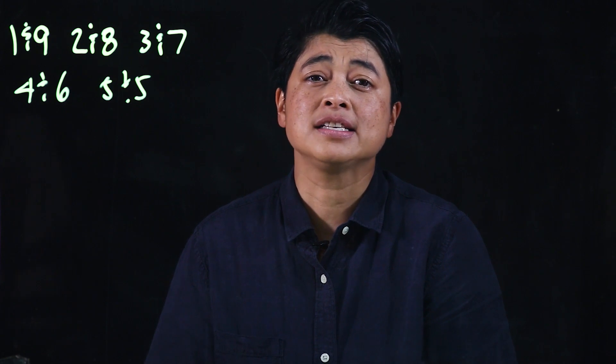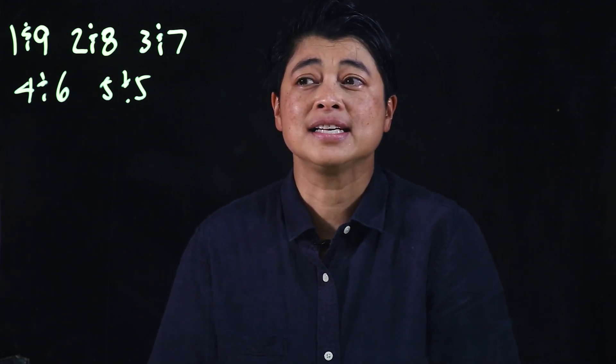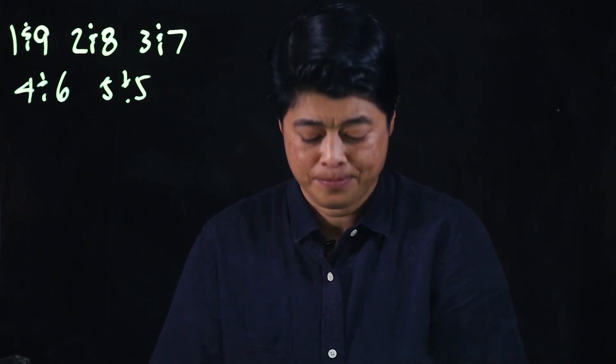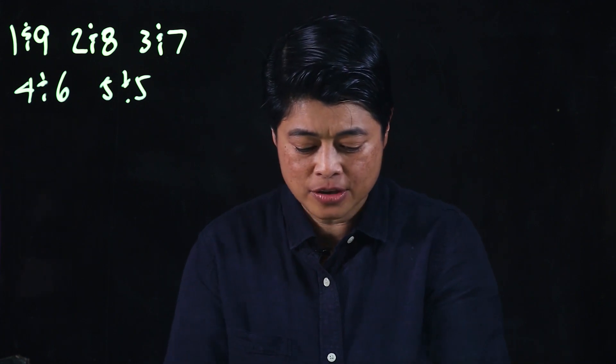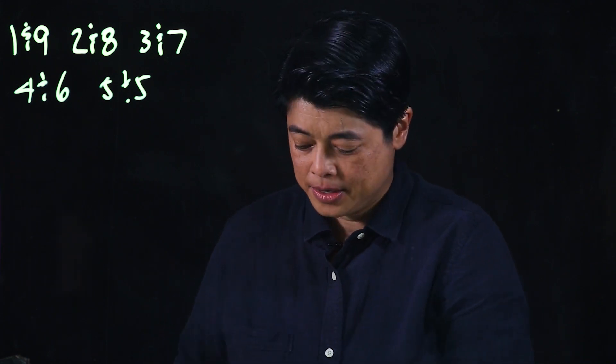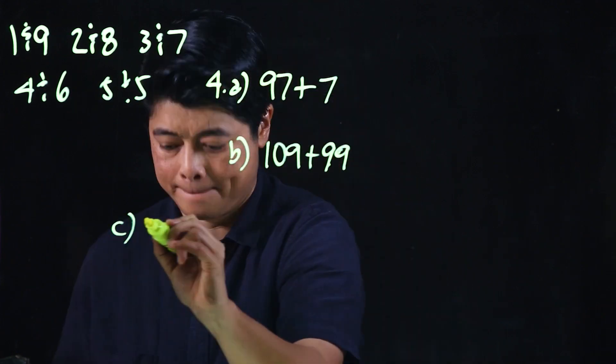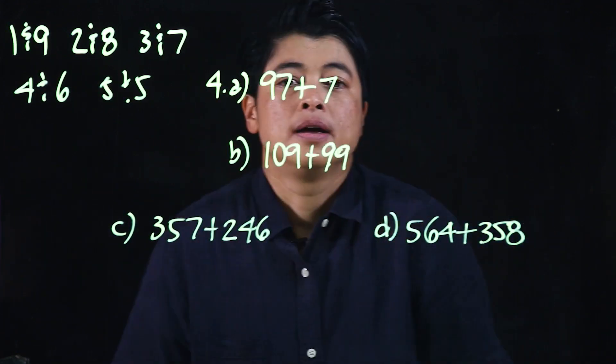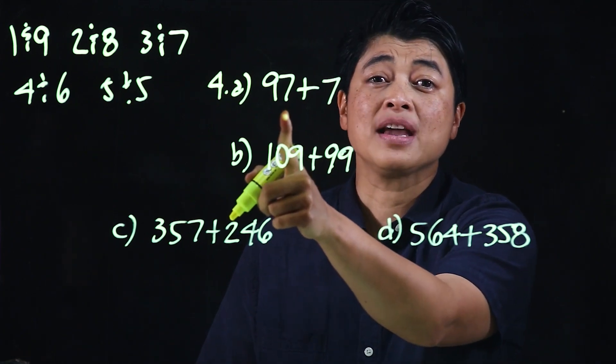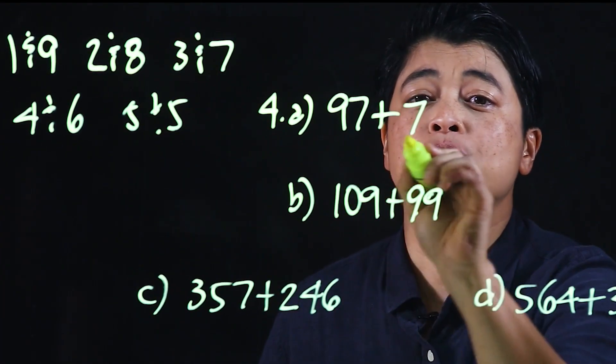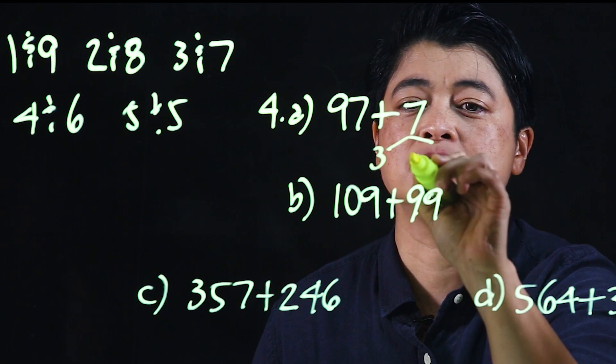So that means 10 and 90, 20 and 80, 30 and 70, 40 and 60, 50 and 50. On page 40, we need to remember to make a hundred, we need to take three from here so we split that.